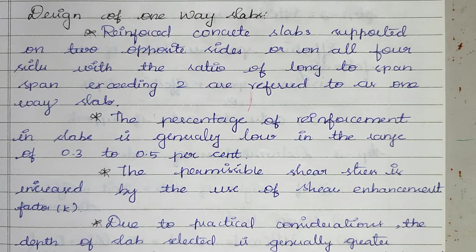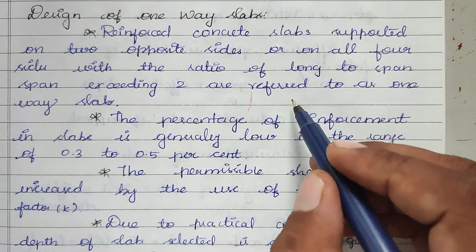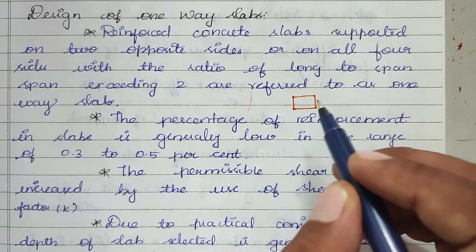The difference between one-way slab and two-way slab is: when the ratio of long span to shorter span does not exceed 2, that is referred to as a two-way slab. When long span to shorter span exceeds 2, that is called one-way slab.